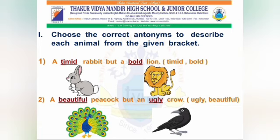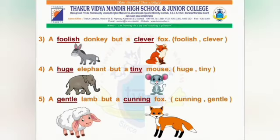Now let's practice what we have learnt. Choose the correct antonyms to describe each animal from the given bracket. A timid rabbit but a bold lion. A beautiful peacock but an ugly crow. A foolish donkey but a clever fox. A huge elephant but a tiny mouse. A gentle lamb but a cunning fox.